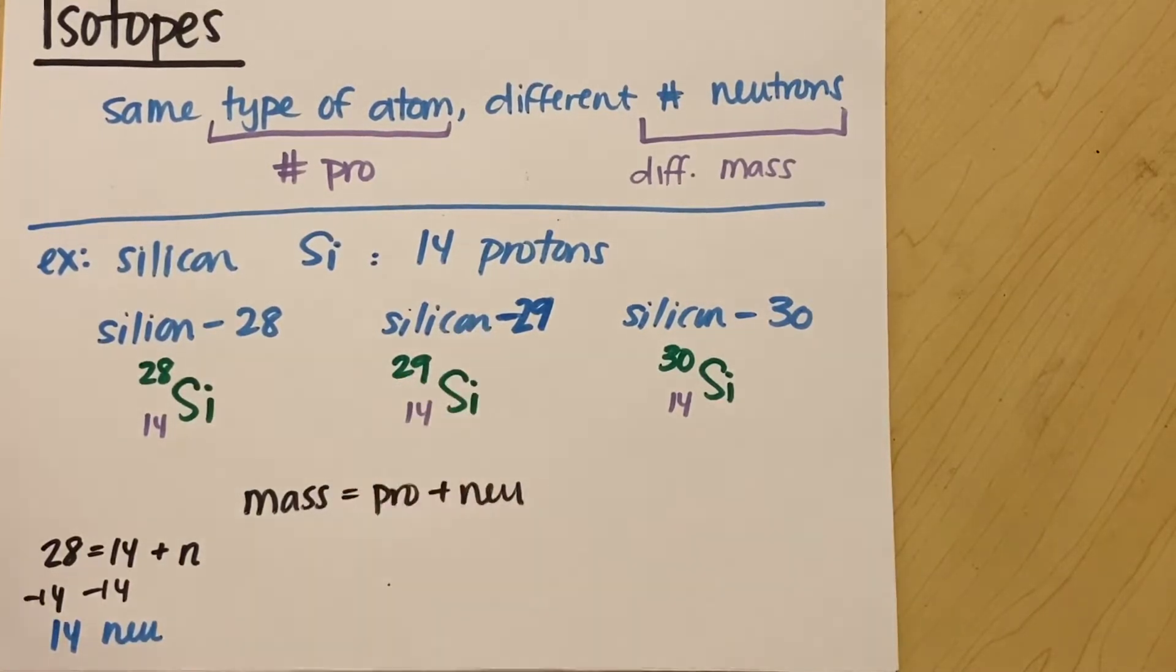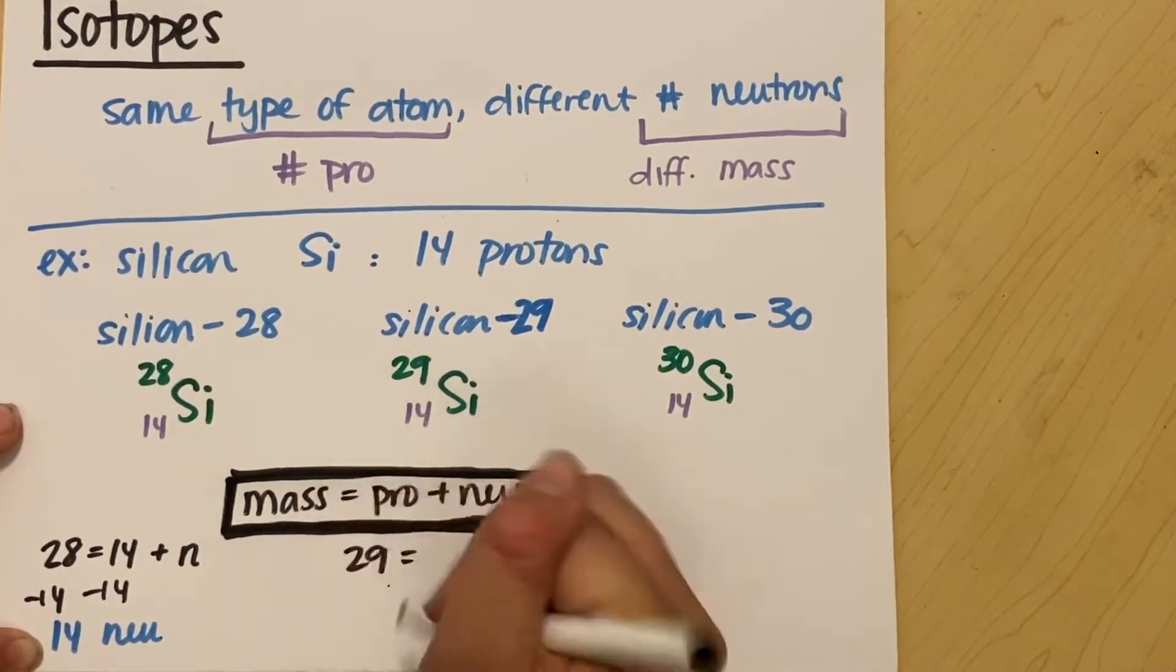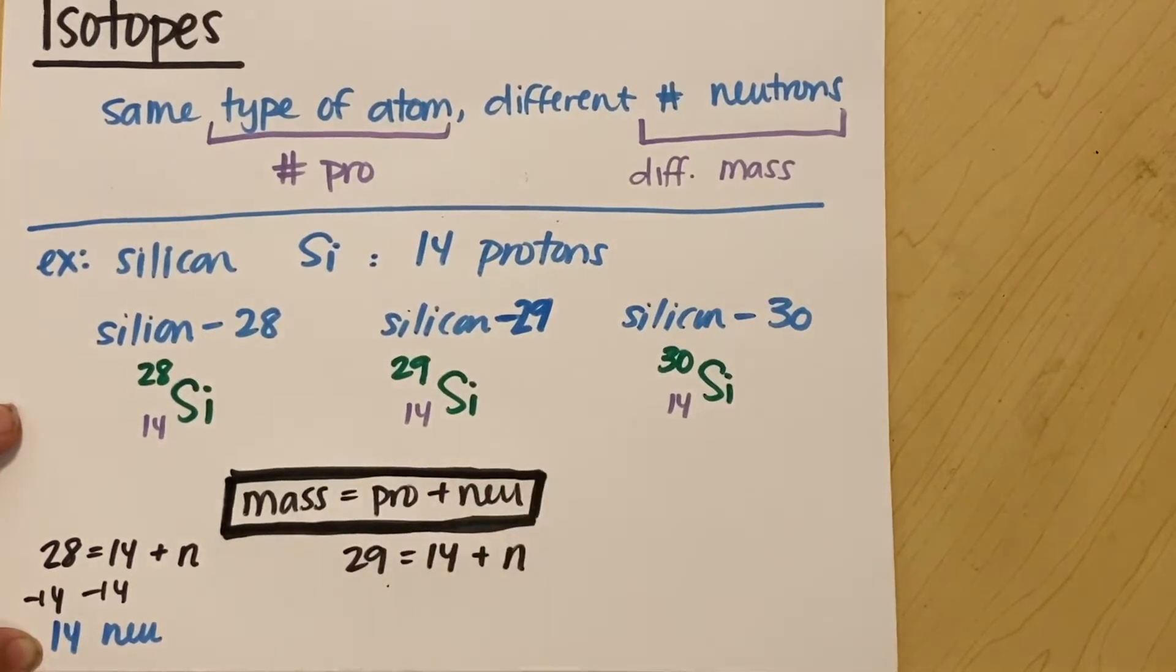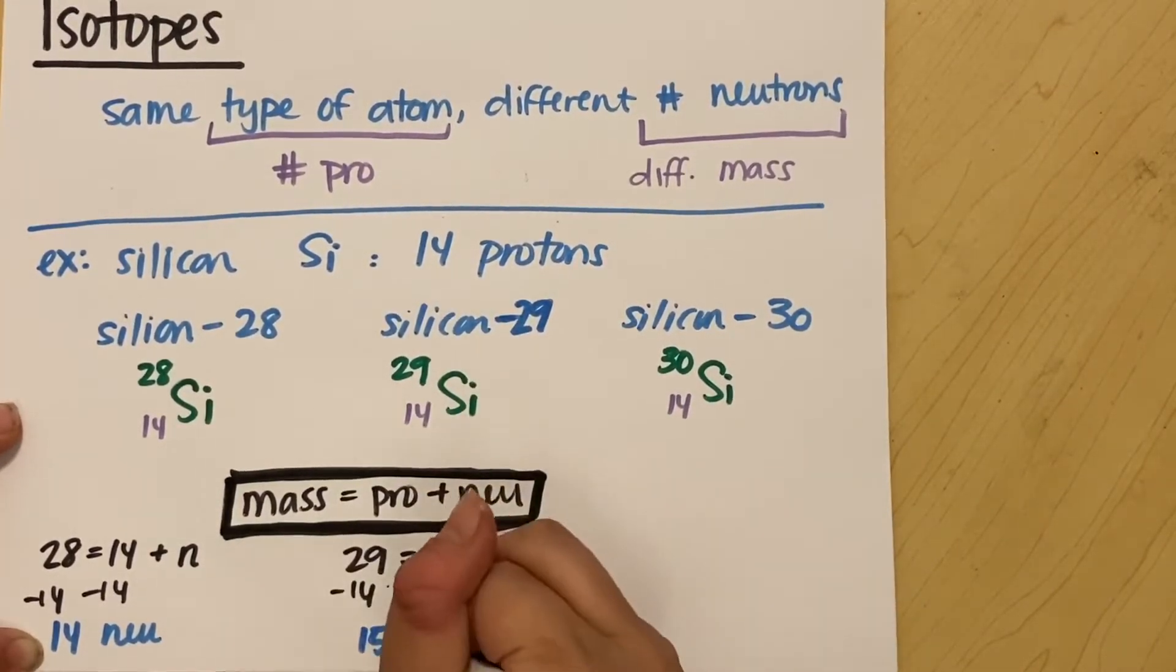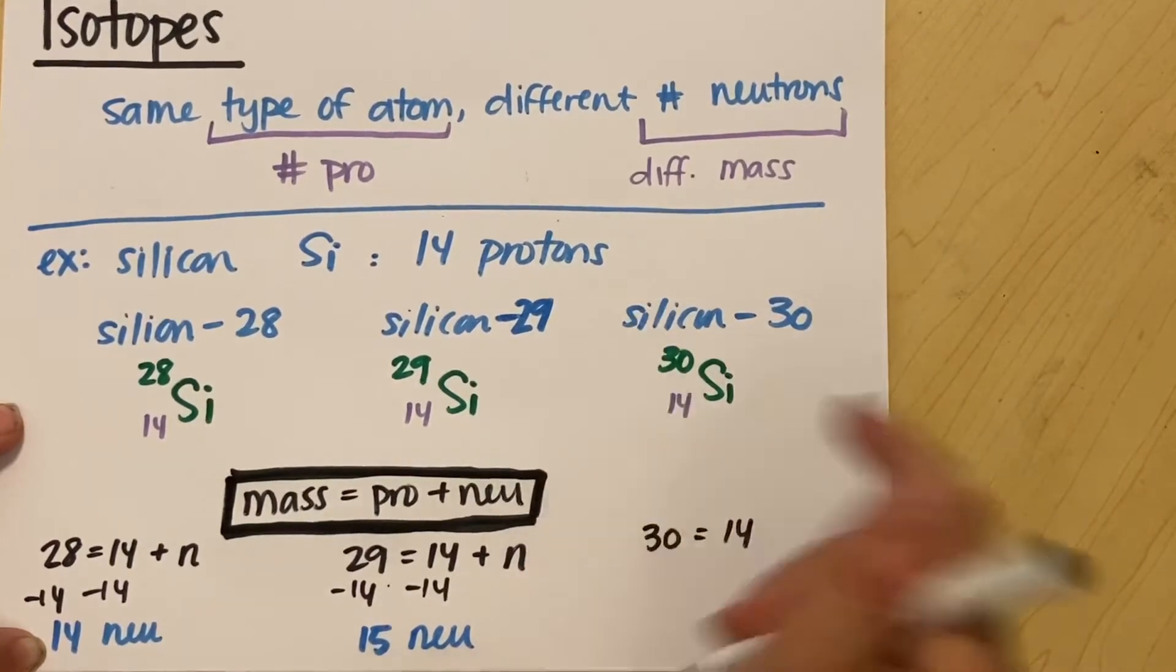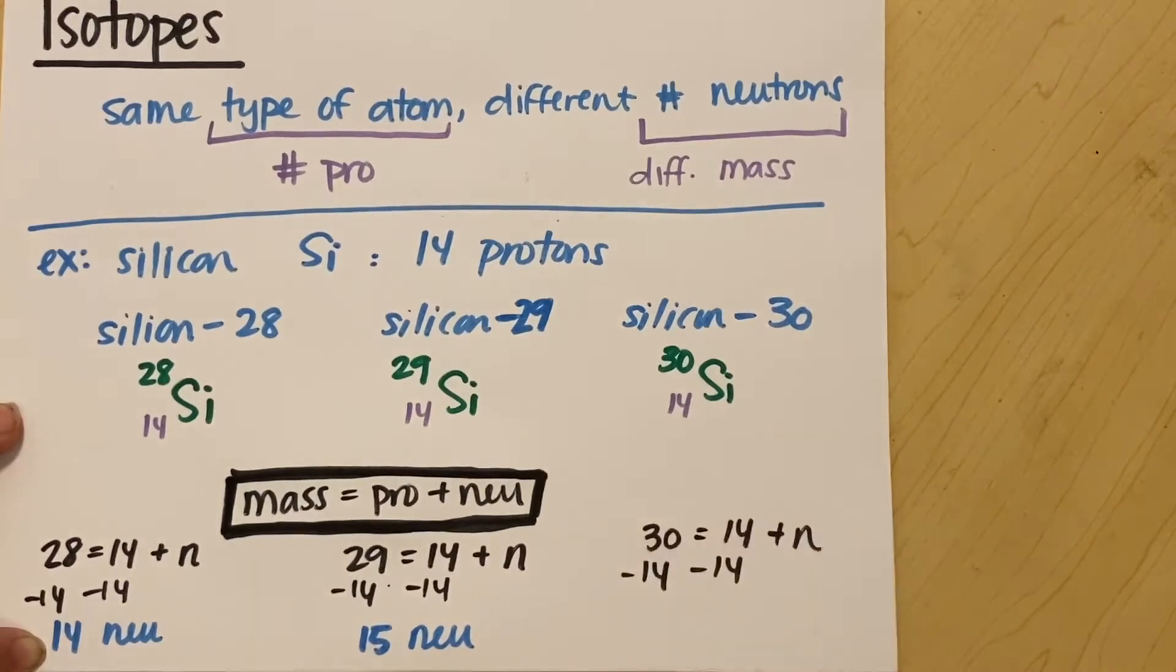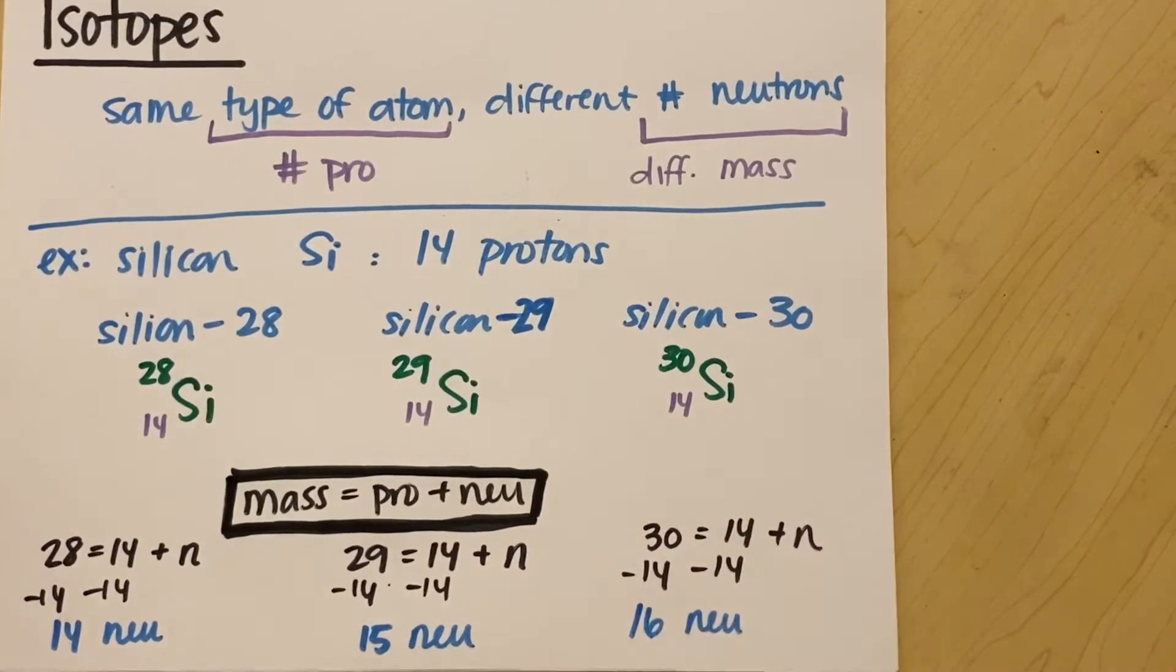Versus in my silicon-29, I'm going to have 29 as my mass number equals number of protons, 14 plus my number of neutrons. Again, minus 14. And I get that this isotope of silicon has 15 neutrons. We get the idea. This is going to be 30 of my mass number equals 14 protons plus the number of neutrons. So this silicon has 16 neutrons.